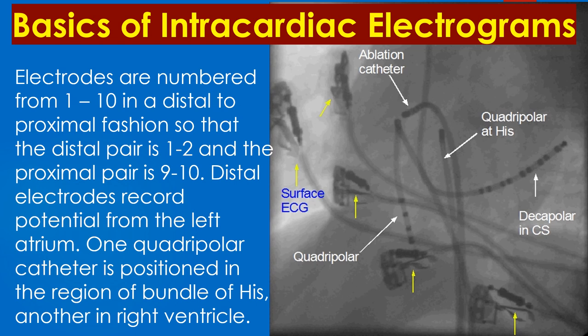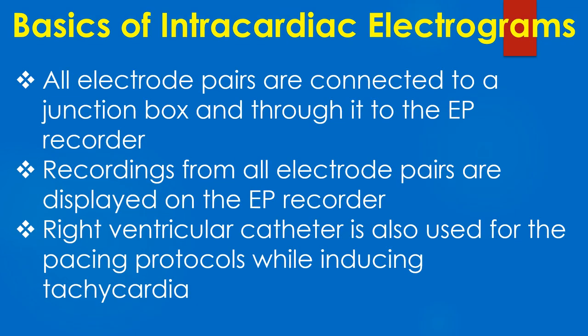Distal electrodes record potentials from the left atrium. One quadripolar catheter is positioned in the region of the bundle of His and another in the right ventricle. All electrode pairs are connected to a junction box and through it to the EP recorder. Recordings from all electrode pairs are displayed on the EP recorder.